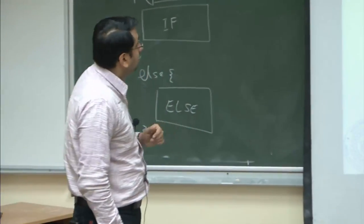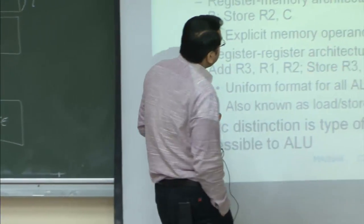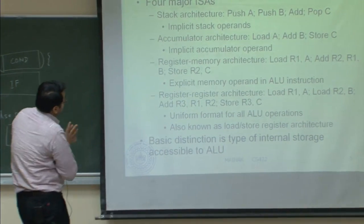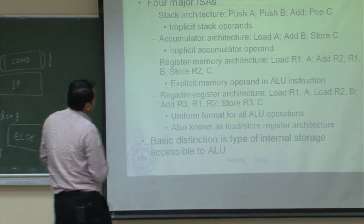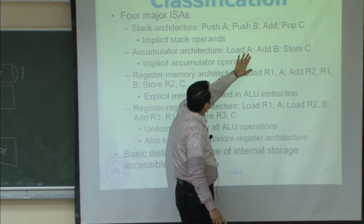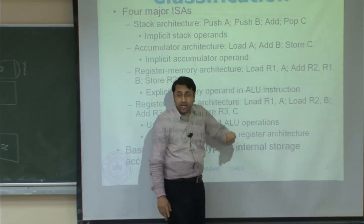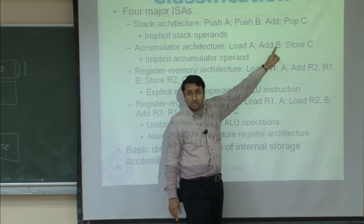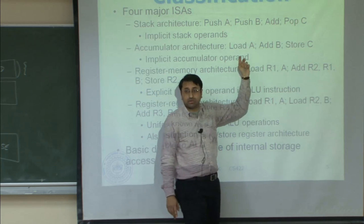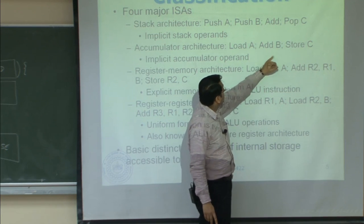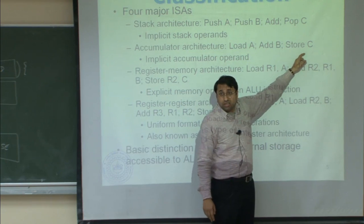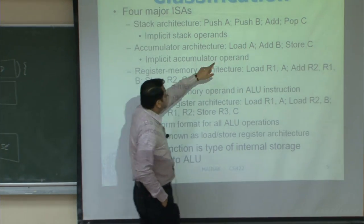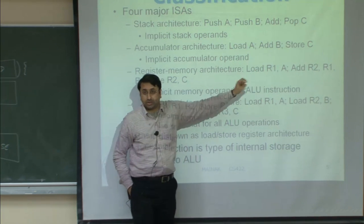Accumulator architecture has an implicit accumulator operand. For c = a + b: load a (brings a into the accumulator), then add b (one operand from memory where b is stored, the other from the accumulator), result remains in accumulator, then store c (picks from the accumulator and sends to memory location c). Here one implicit operand is always the accumulator.